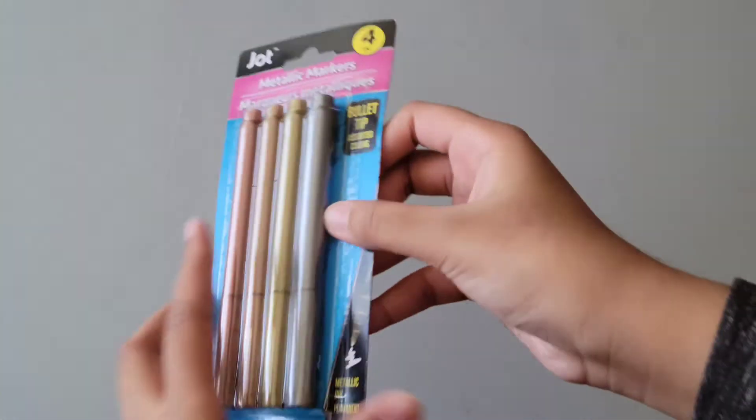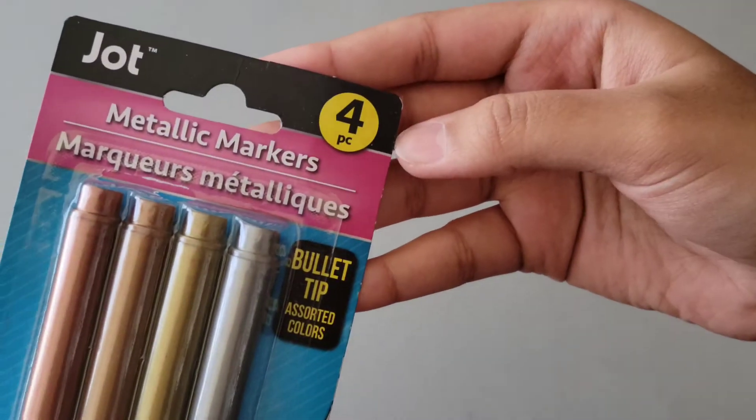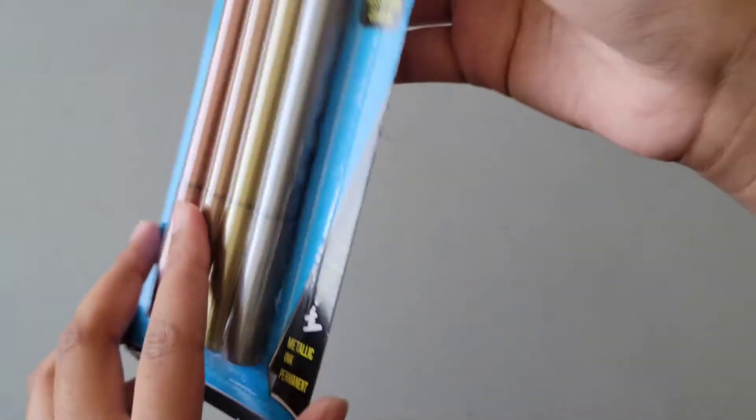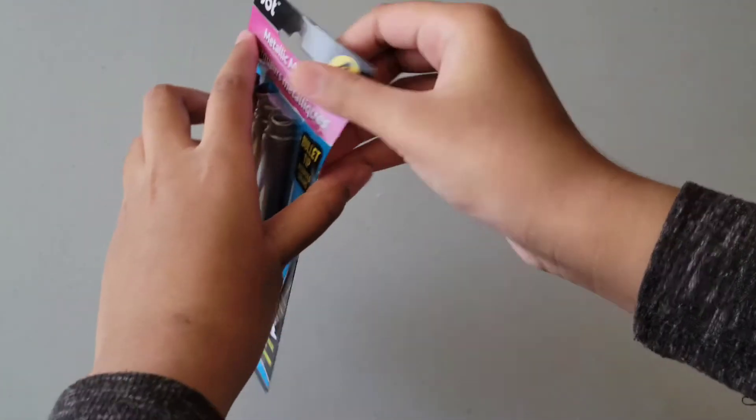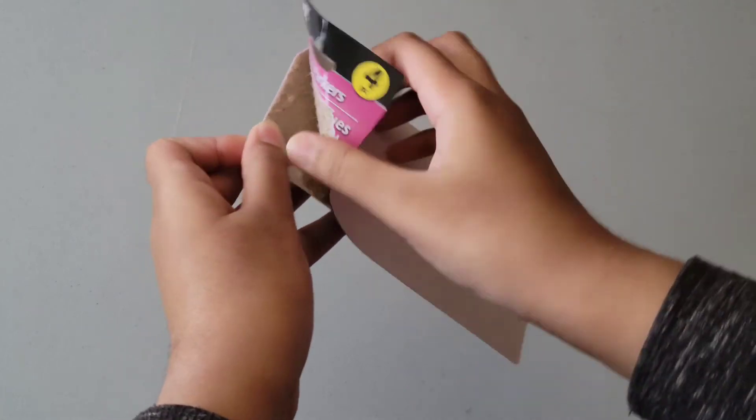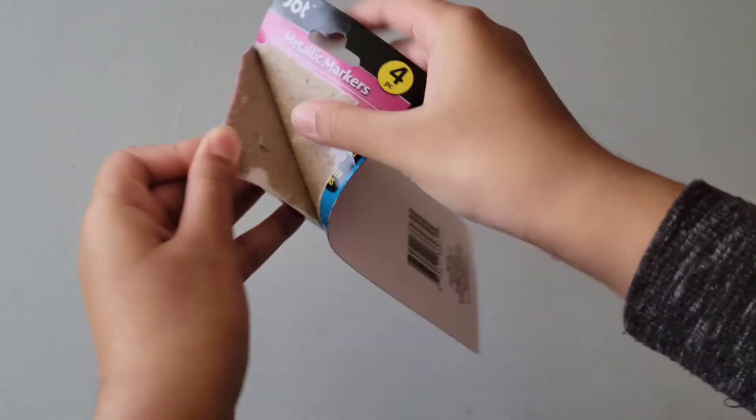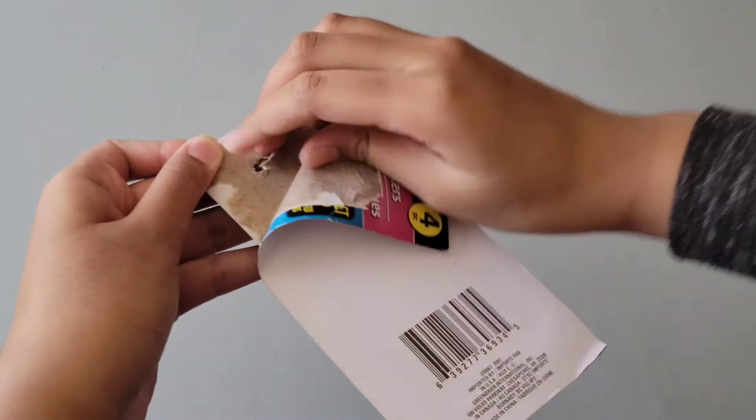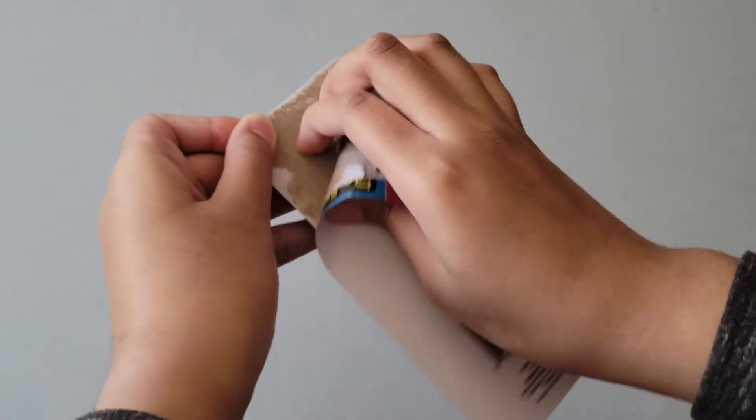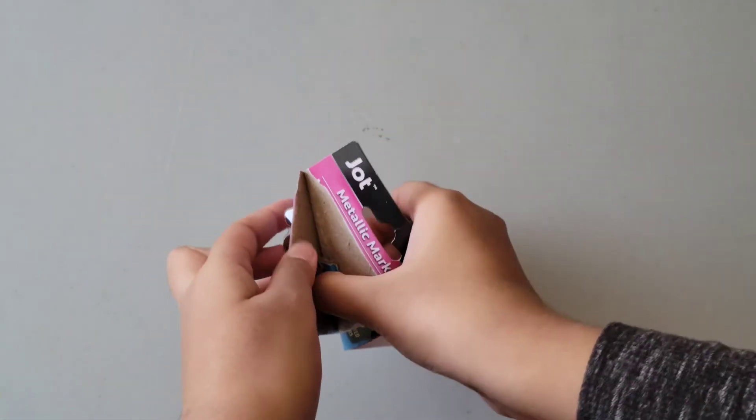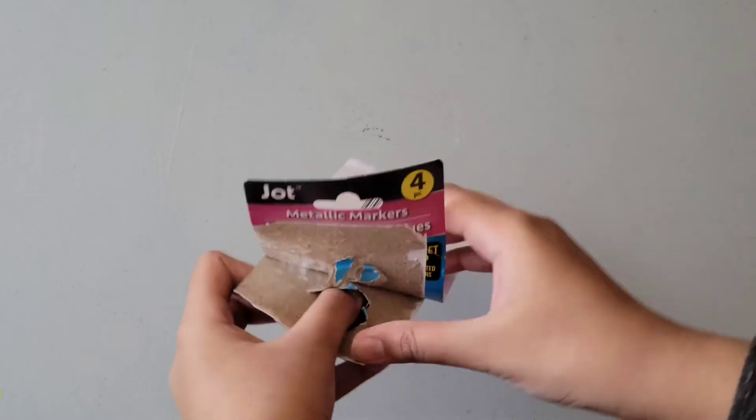I got four markers in one. It is a bullet tip with four pieces in it. Now, let's just open it up. I'm just going to be tearing it apart.